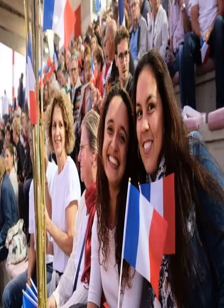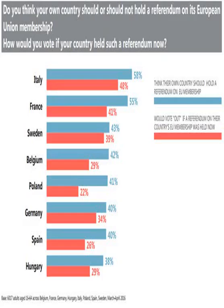The questions that referendums ask may be revised if parties involved in negotiations consider them to be too leading. Negotiations notably need to address what would make a result binding. For some independence referendums, a simple majority is required for one option. In other cases, a quota can be used, where a certain percentage of the vote or the electorate needs to be in favour of an option for it to be binding.